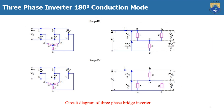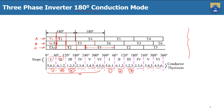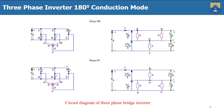In Step 3, switches 1, 2, and 3 are conducting — two from the positive group and one from the negative group. The switch in the negative group is connected to phase C, so VCO = -2VS/3 and VAO = VBO = VS/3. These are the phase voltages: VAO, VBO, and VCO for each step.